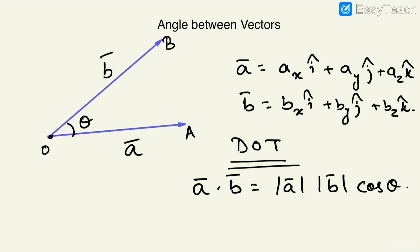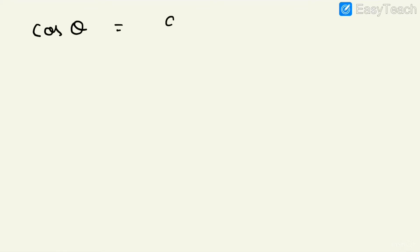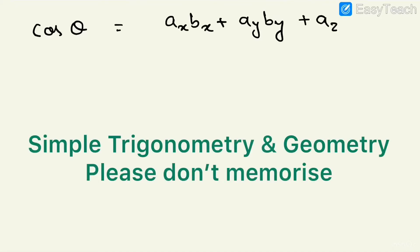Theta is the angle between the two vectors, and A dot B component-wise is component-wise multiplication summed up. This is a scalar equation — both sides are scalar. So we can easily find cos of theta: cos theta equals ax·bx plus ay·by plus az·bz divided by modulus of A.